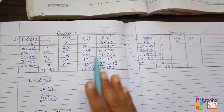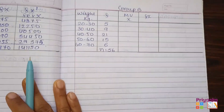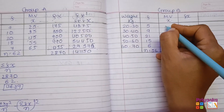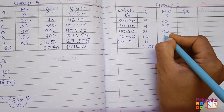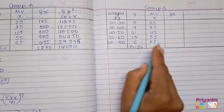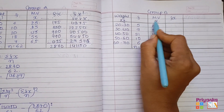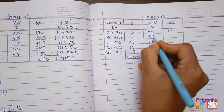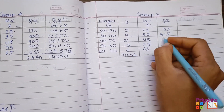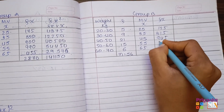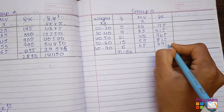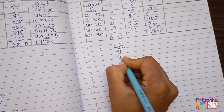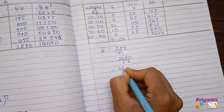Here we complete the mean and standard deviation for group A. Same way we will do for group B. The mid values will be the same as they share a similar class: 25, 35, 45, 55, and 65. For group B, fx values: 5 multiplied by 25 gives 125. 9 multiplied by 35 gives 315. 21 multiplied by 45 gives 945. 55 multiplied by 15 gives 825. Then 390. The total fx will be 2600. Mean is sigma fx upon n: 2600 divided by 56, and we get the answer 46.43.